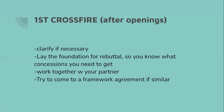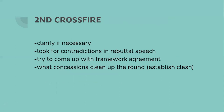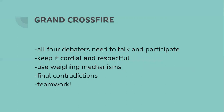The second crossfire is really similar — clarify if necessary and look for contradictions in the rebuttal speeches. For example, if one speaker says money is important but the other speaker says human lives is most important, that's a contradiction. Once again, you can try to come to a framework agreement here if you forgot to do it in the first one. Also, use concessions to clear up the round and establish a clash — for example, you can say: 'Would you agree that a major clash in today's round will be X?' Then prove why you win that clash in later speeches.